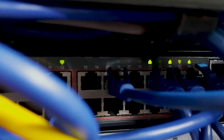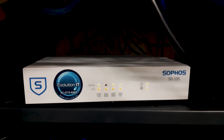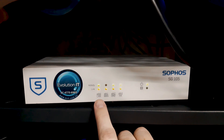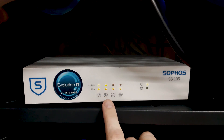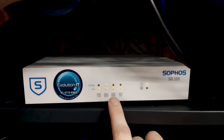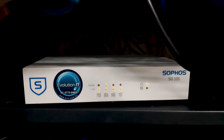All the devices connected to the switch will now be on the same network. In order for those devices to have internet, we now need to connect the router to the switch. The LAN port is where you will connect your switch, and the WAN port is where you will connect your internet source. You may also use a DMZ connection, but that is dependent on your setup.